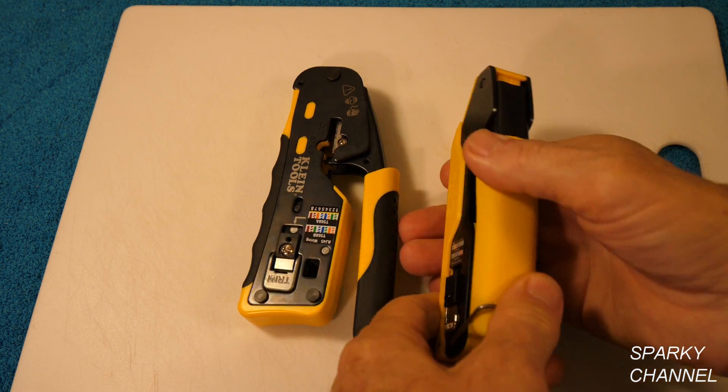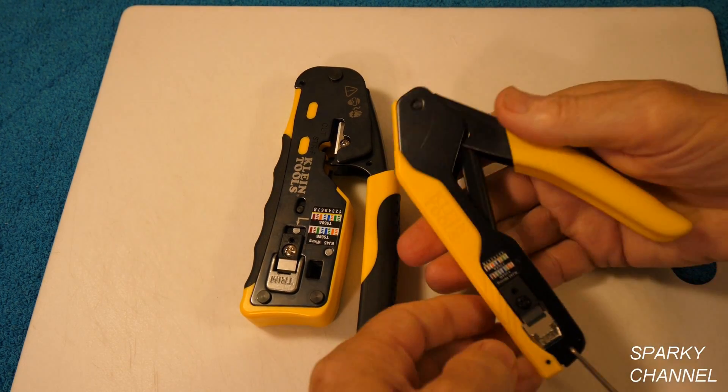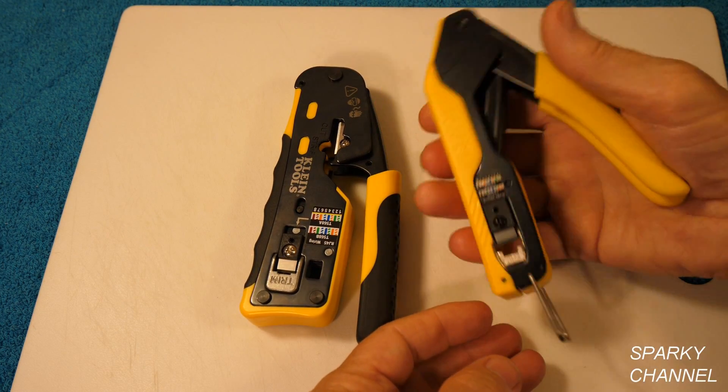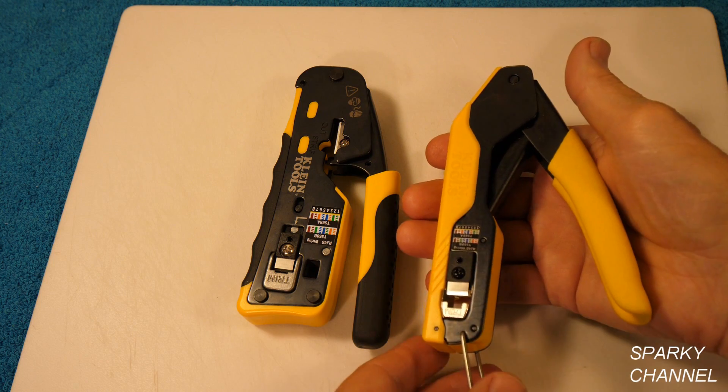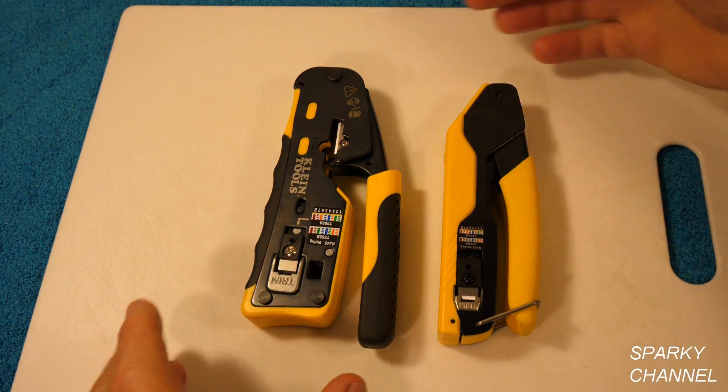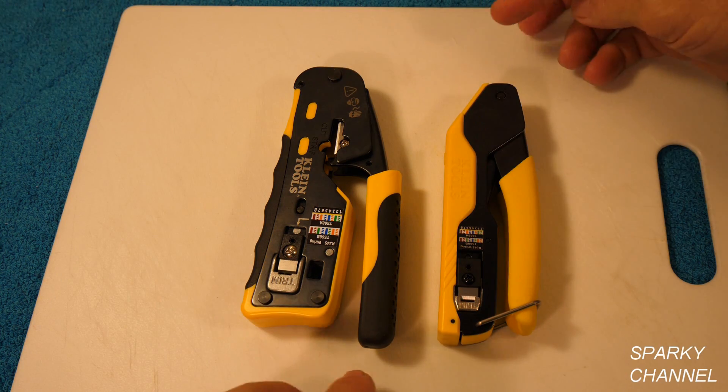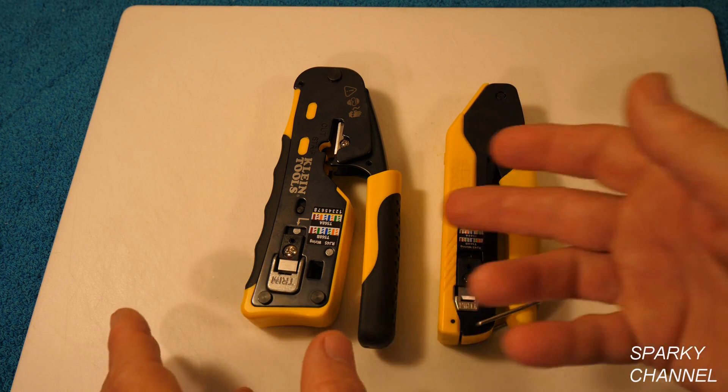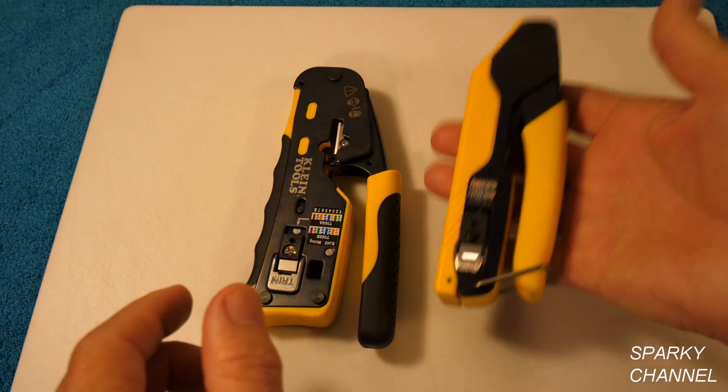But now, Klein's come out with a brand new one. This is called the compact modular crimper. No ratchet. But it's smaller. You can see that it's considerably smaller than this one and it weighs four ounces less. I weighed them both.